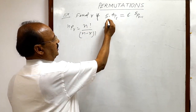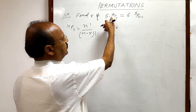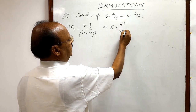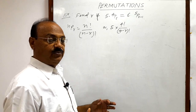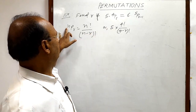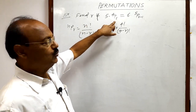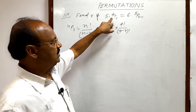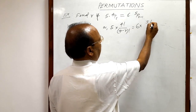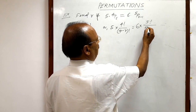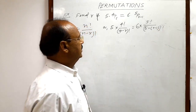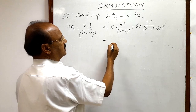On the left side, n is 4 and r is unknown, so we have 5 into 4 factorial divided by (4 minus r) factorial. It is important to note that the value of r is always less than n in this formula, so r should be less than 4. On the right hand side, n is 5, so we have 6 into 5 factorial upon (5 minus r minus 1) whole factorial.